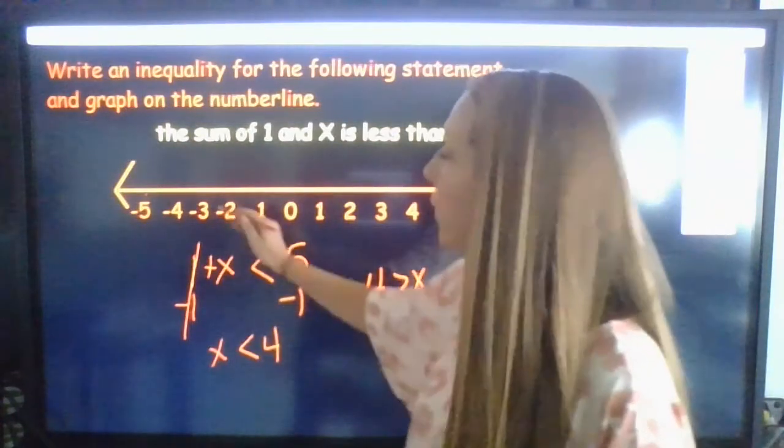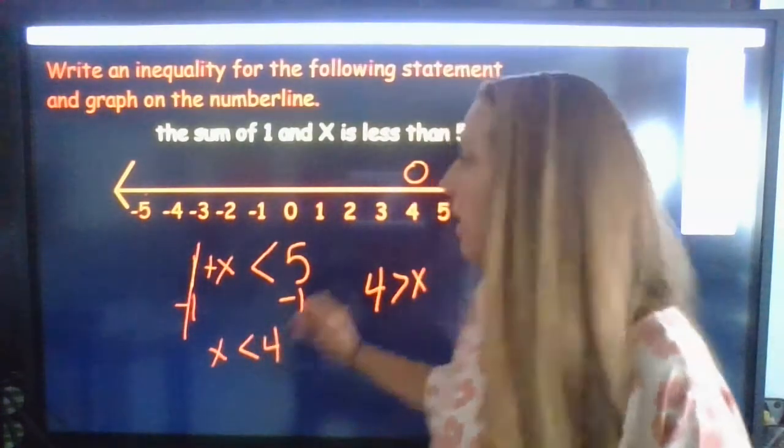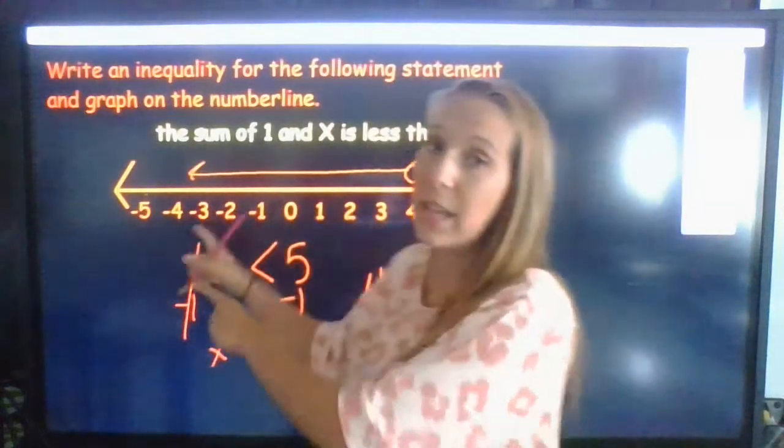So we're going to go to 4. It's going to be an open circle at 4 because it does not have an equal to sign, and we're going to go left, which means obviously less than 4.